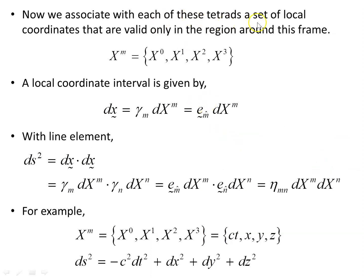We associate with each tetrad a set of local coordinates valid only in the region around that frame. The observer in the laboratory, following a geodesic, sets up local coordinates x^m. A local coordinate interval dx is given by gamma_m dx^mu, or dx^m-hat. With the line element ds squared equals dx dot dx, this works out as the Minkowski metric times these coordinate differentials.